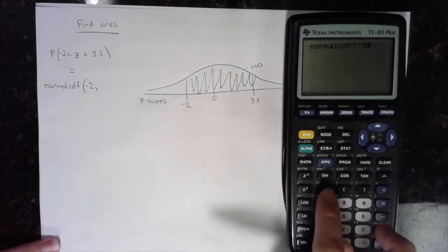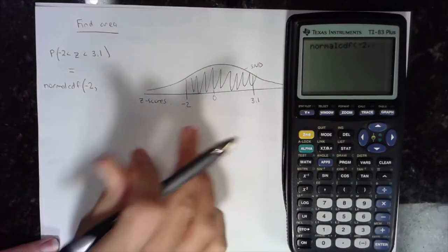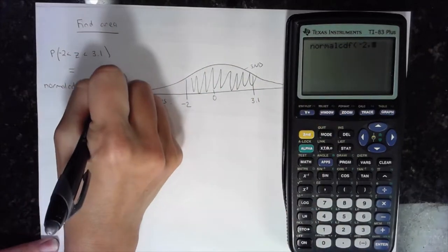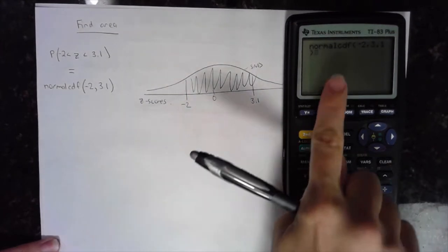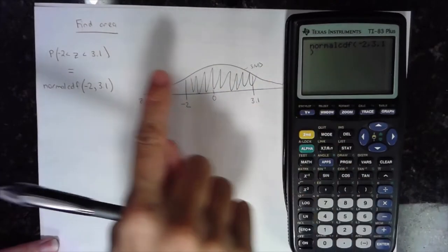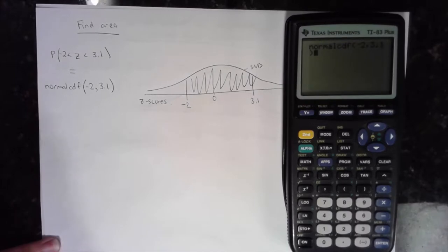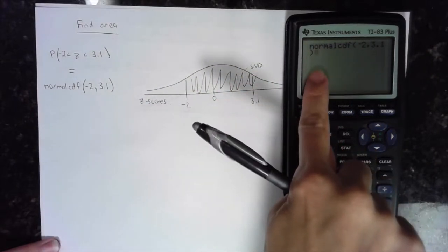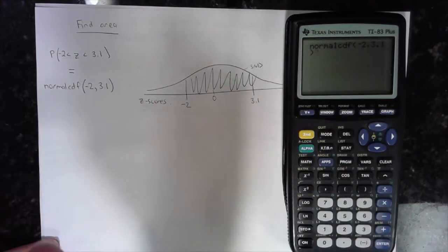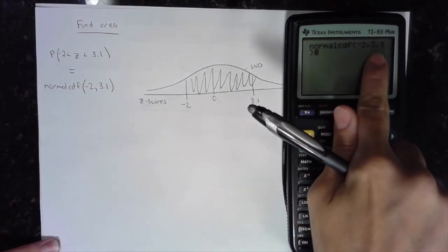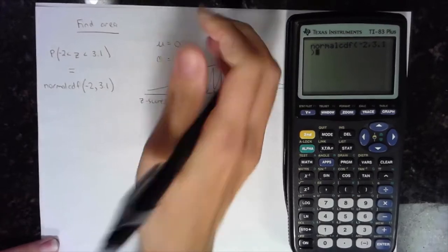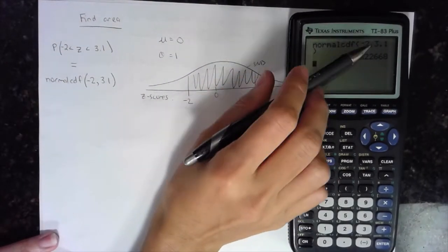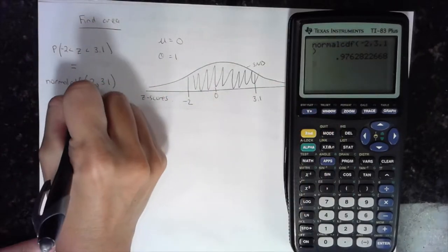On my calculator, I'm telling it to find the area between the two z-scores, negative 2 and 3.1, on a standard normal distribution curve. For those of you with the TI-84 where it asks for lower bound, upper bound, mean, and standard deviation: lower bound is negative 2, upper bound is 3.1, mean is 0, and standard deviation is 1, since you're on an SND curve. Once you click paste and press Enter, you get approximately 0.976.